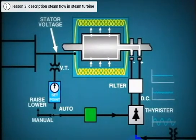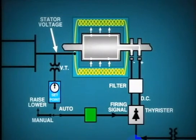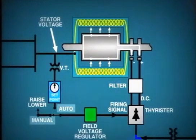The level of DC voltage can be adjusted by controlling the firing of a thyristor-type rectifier. The firing circuit is controlled by the field voltage regulator. This regulator has two inputs: manual and auto.